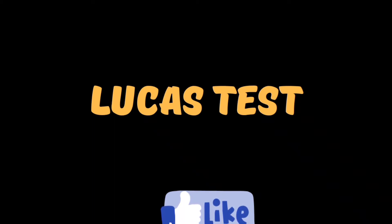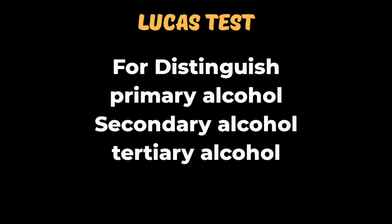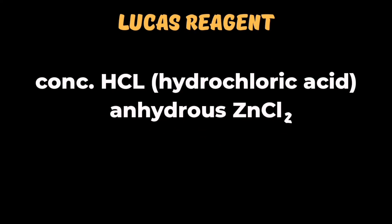What is the Lucas test? The Lucas test is done for primary alcohol, secondary alcohol, and tertiary alcohol. When we have a question to distinguish between 1st degree, 2nd degree, and 3rd degree alcohol, then the Lucas test is performed. In this test, we use the reagent concentrated hydrochloric acid and anhydrous ZnCl₂. Don't confuse dilute and concentrated — in the Lucas reagent, it is concentrated HCl. This is an important noted point.